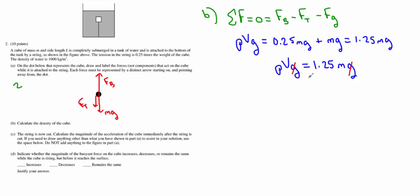What I want to do is move this volume over here and then move that 1.25 over there to show that the mass of the object over its volume is the density of the fluid it's in divided by 1.25.